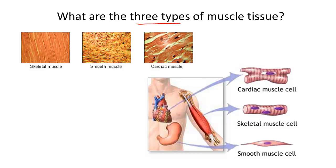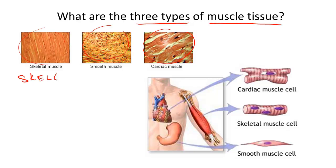What are the three types of muscle tissue, and how can we distinguish the different types of muscle tissue if we were to look in a microscope? The three types of muscle tissue are called skeletal, smooth, and cardiac muscle.